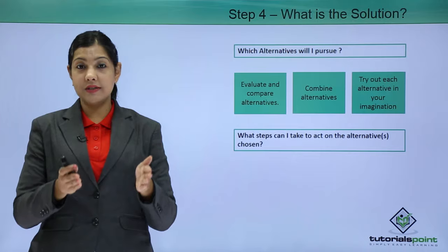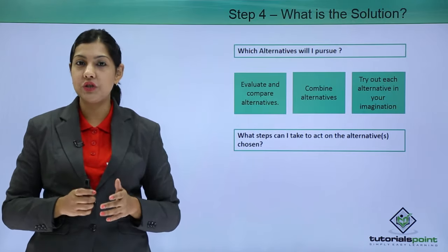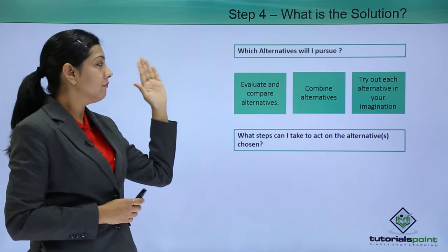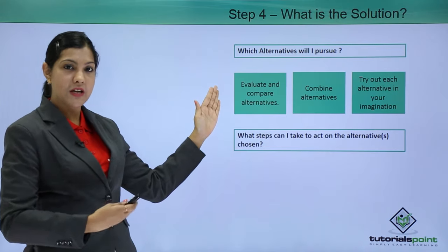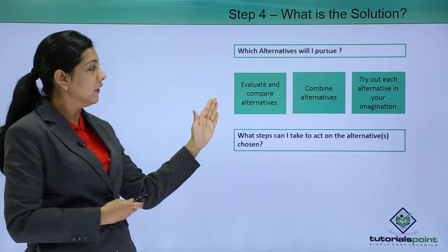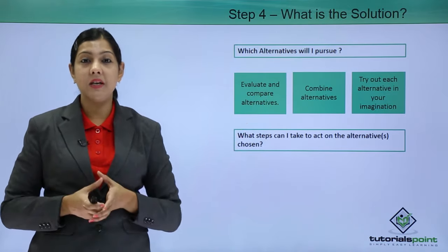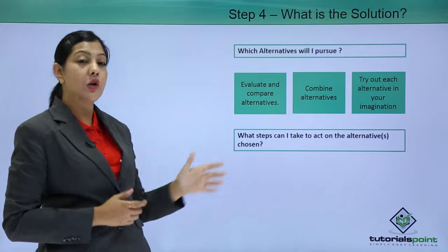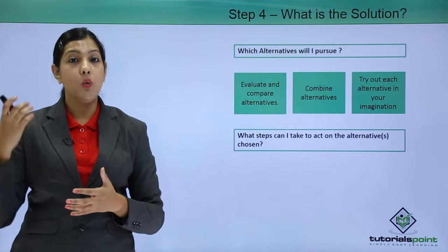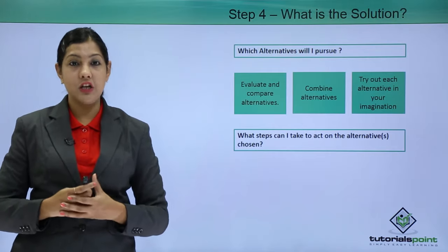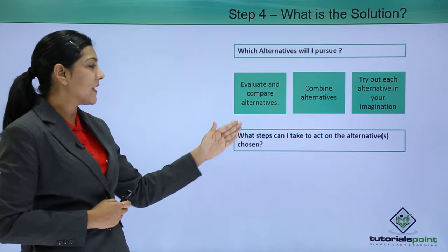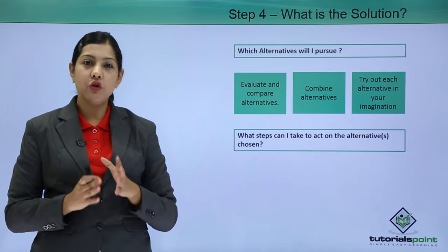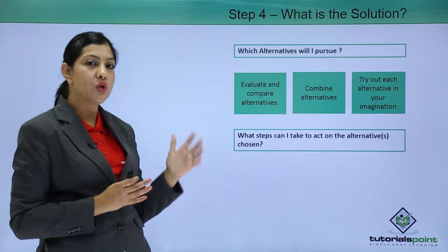Step four: what is the solution? After listing the advantages, disadvantages, pros, and cons of each alternative, try to see what the best solution is. Evaluate and compare the alternatives — spend a lot of time with each one and try to compare them to each other. You can also combine alternatives, as two or three solutions combined can sometimes give you the best outcome. Try out each alternative in your imagination — visually play each solution in your mind and have a mental discussion to find the best choice.